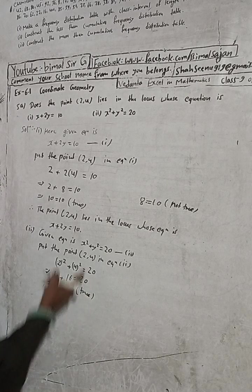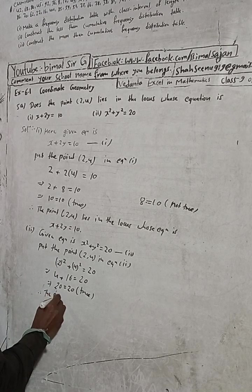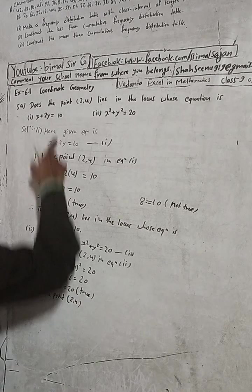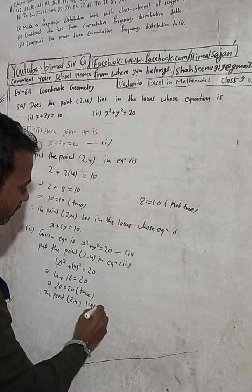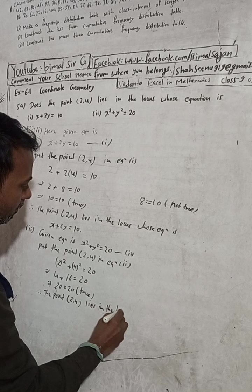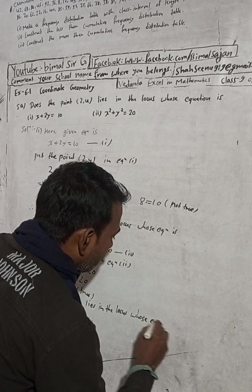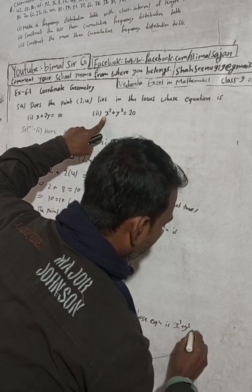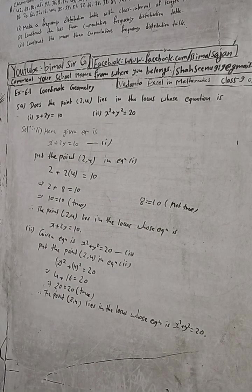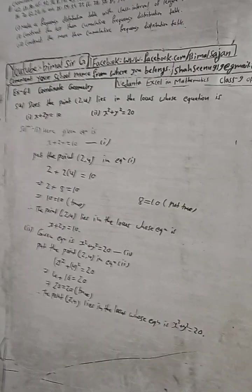So this is true. Therefore the point (2,4) lies in the locus whose equation is x² + y² = 20. Okay, so this is the solution. What will you do in the next video?